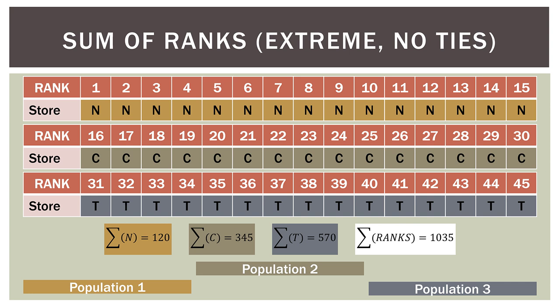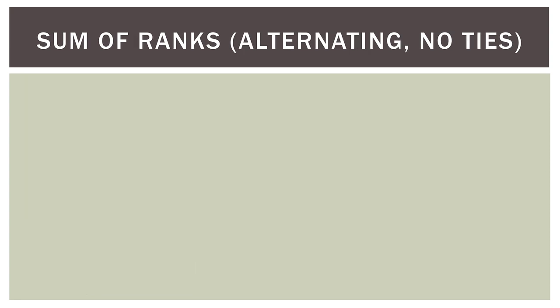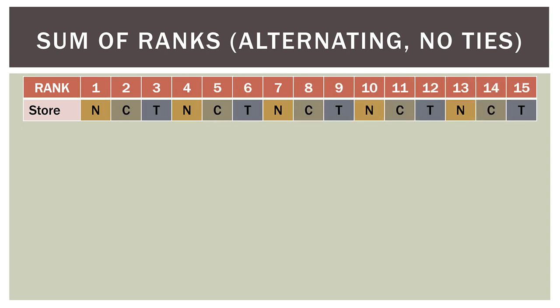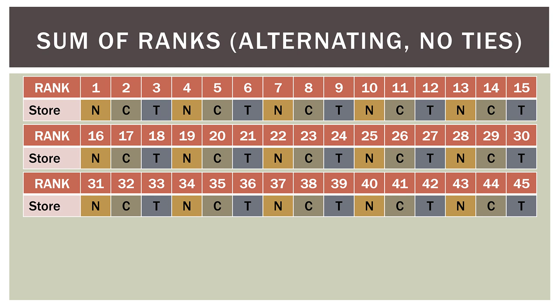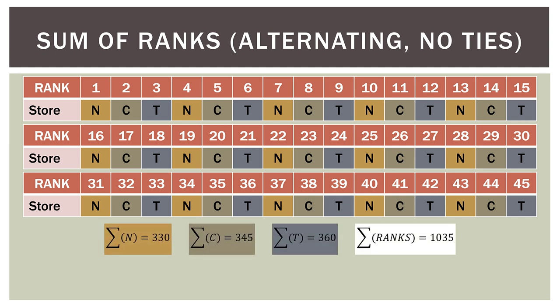If we sum these alternating ranks up, the sum of ranks for Nariman Point is 330, for Churchgate is 345, and for Taj Mahal Palace is 360. The center of our data here is 345, and that makes sense: if you take 1035, the sum of all ranks, and divide by three, you get 345. So visually, Nariman Point is slightly to the left, Churchgate slightly to its right, and Taj Mahal Palace slightly to the right of Churchgate.